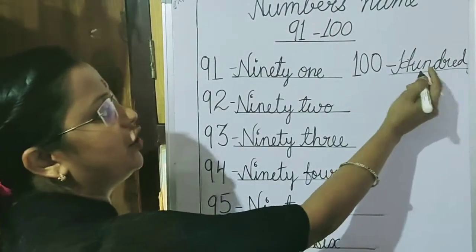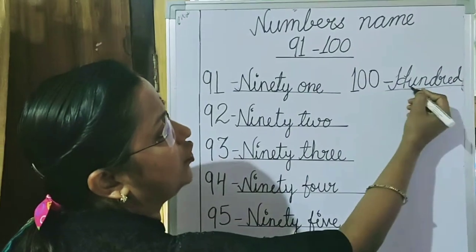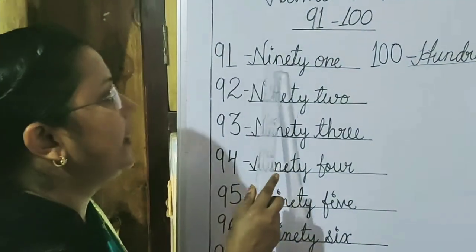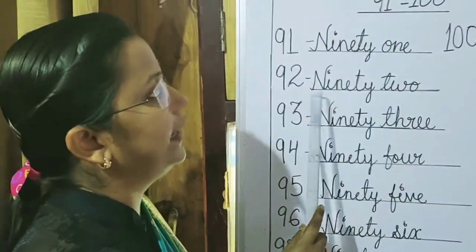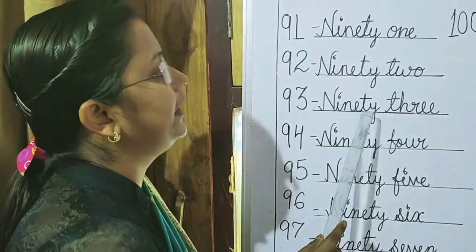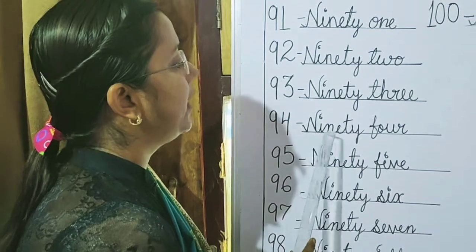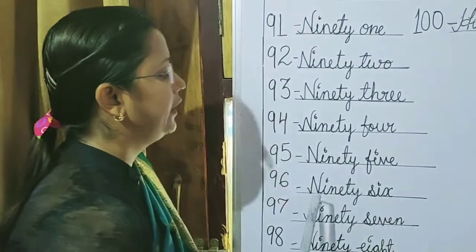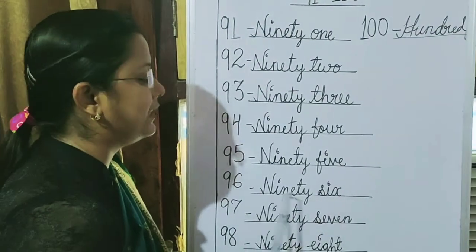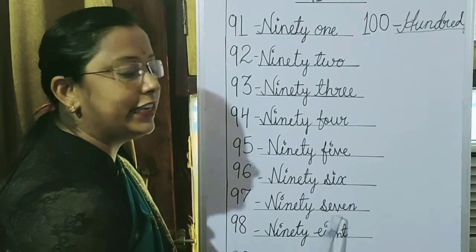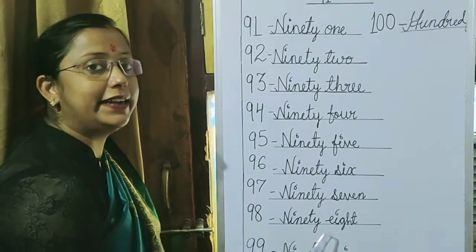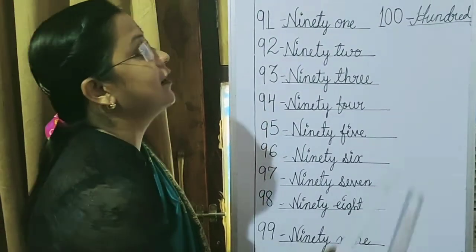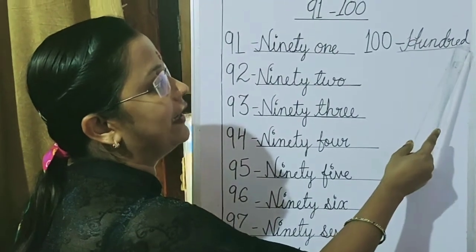Spelling of 100 once again: H-U-N-D-R-E-D, 100. Quick recap: O-N-E — 91; N-I-N-E-T-Y plus T-W-O — 92; N-I-N-E-T-Y plus T-H-R-E-E — 93; N-I-N-E-T-Y plus F-O-U-R — 94; N-I-N-E-T-Y plus F-I-V-E — 95; N-I-N-E-T-Y plus S-I-X — 96; N-I-N-E-T-Y plus S-E-V-E-N — 97; N-I-N-E-T-Y plus E-I-G-H-T — 98; N-I-N-E-T-Y plus N-I-N-E — 99; and H-U-N-D-R-E-D — 100.